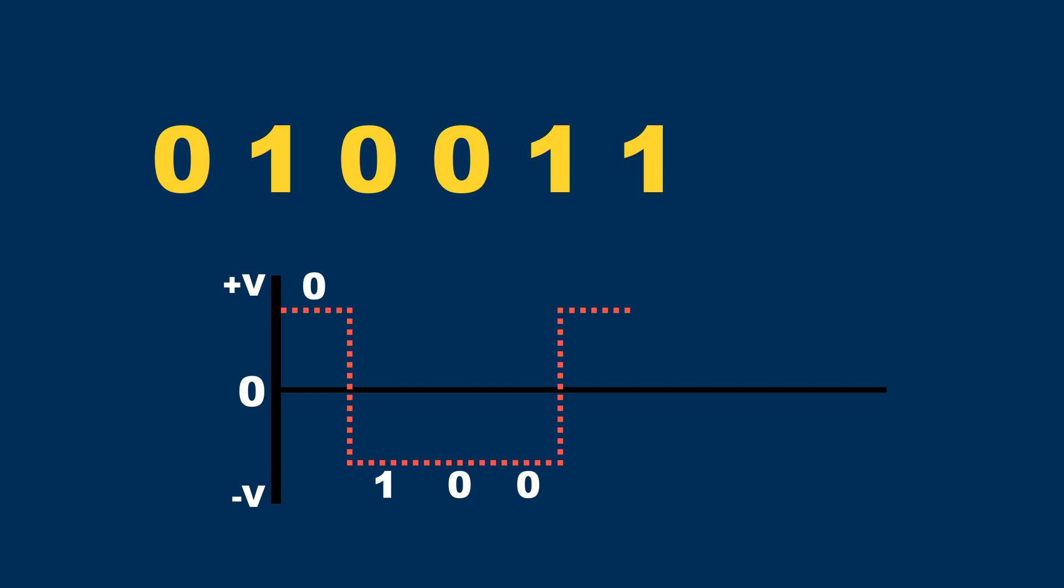The next bit is a 1, so the signal changes to a positive voltage level. The next bit is also a 1, so the signal again changes to a negative voltage level and so on. This is the basic principle of the Polar NRZI line coding scheme.